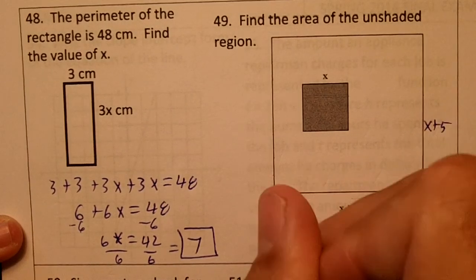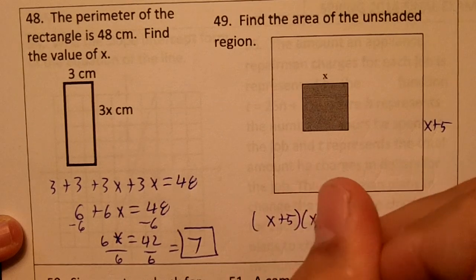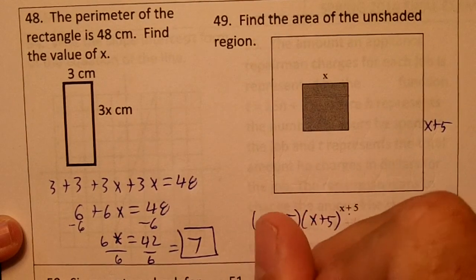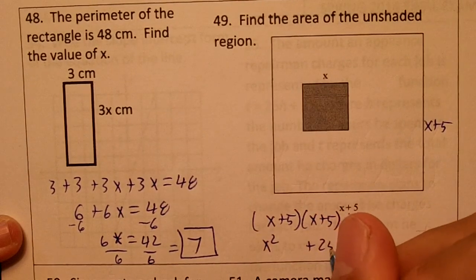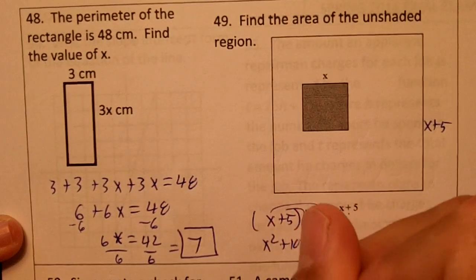We need to multiply x plus 5 times x plus 5. We would get x squared plus 25, plus 10x.